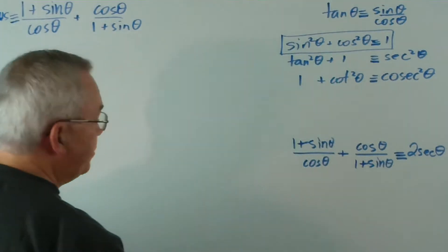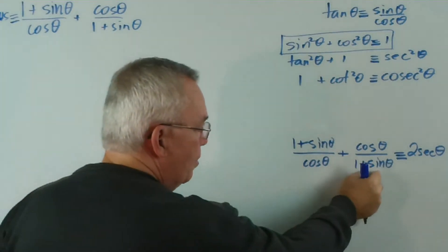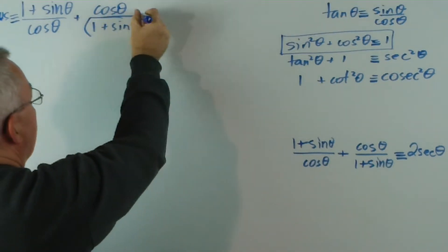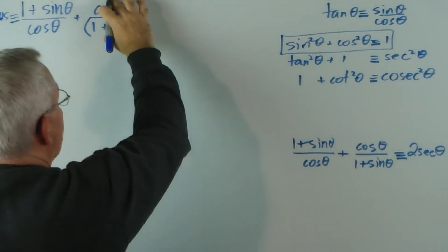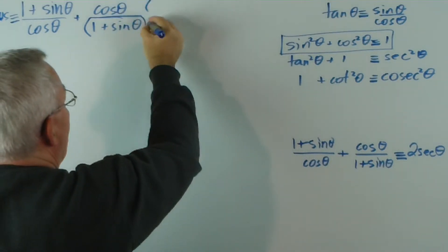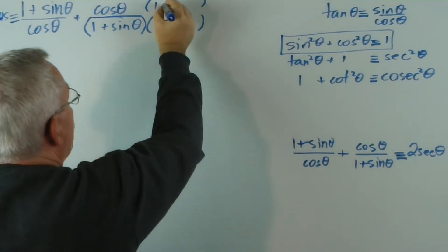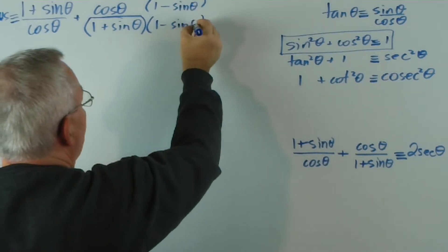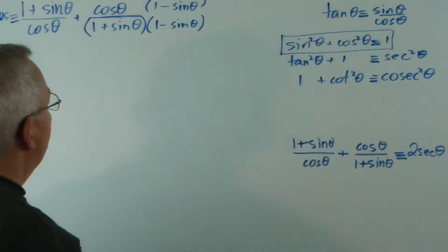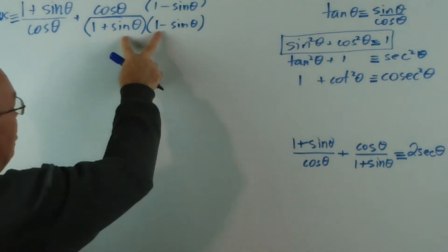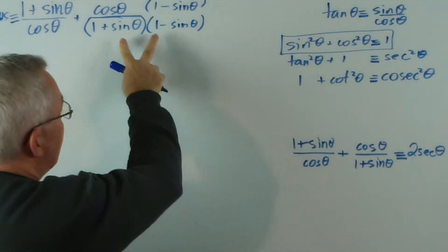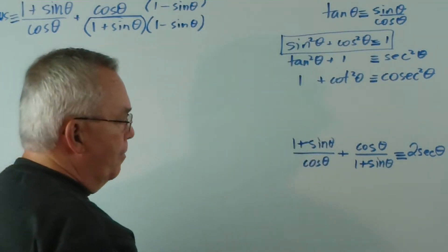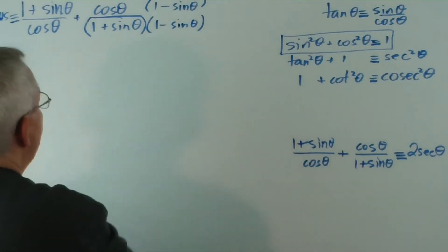Well, the answer is that we multiply by the conjugate. You might recall from rationalizing denominators and things like that. But if I take this second fraction and multiply the top and the bottom by 1 minus sine theta, that will give me an expression that will be able to use this identity.